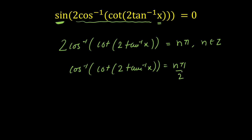We have to calculate the valid values of n. There are limited values of n possible because on the left-hand side we have a restricted range. The range of cos⁻¹(x) is 0 to π, so the right-hand side value must also belong to the interval 0 to π.